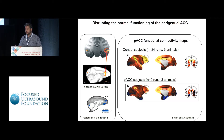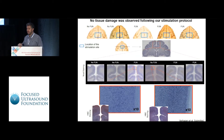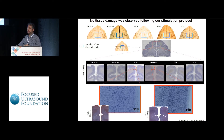Importantly, these effects were not driven by damage to the tissue. In this study, we stimulated another region of the medial frontal cortex. The animal was stimulated, scanned, and then sacrificed at the end of the experiment. As you can see, there is no damage observed in the post-mortem scans or in the histological assessment done afterwards.